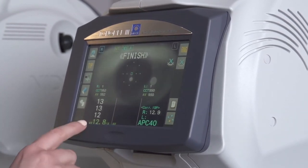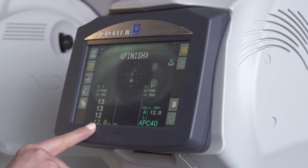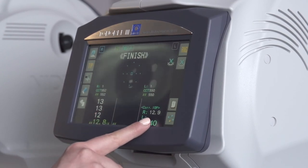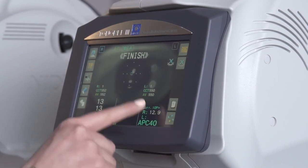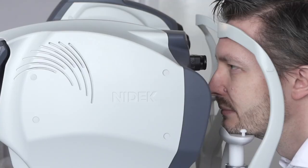The measurements are finished now, and we can see on the screen we've got our average tonometry reading and our corrected intraocular pressure based on our central corneal thickness in our pachymetry measurement.